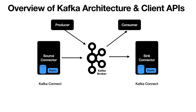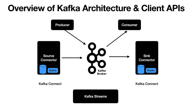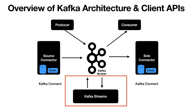The next advanced API is the Streams API. This API basically reads the data from the Kafka topic, and there are many different things that can be performed on the data. We can apply transformations, data enrichment, branching the data into multiple data streams, aggregating the data, or joining the data from multiple Kafka topics, and then writing it back to the Kafka topic.